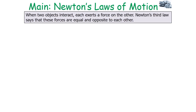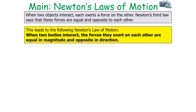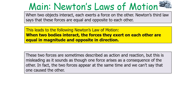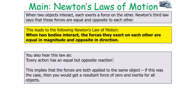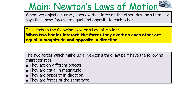When two objects interact with each other, each exerts a force on the other. Newton's third law of motion says that these forces are equal and opposite. When two bodies interact, the forces they exert on each other are equal in magnitude and opposite in direction. These two forces are sometimes described as the action-reaction force, but this is misleading because it sounds as though one force arises as a consequence of the other. In fact, the two forces appear at the same time and we can't say which caused the other. The two forces that make up a Newton's third law pair act on two different objects, are equal in magnitude, opposite in direction, and are forces of the same type.